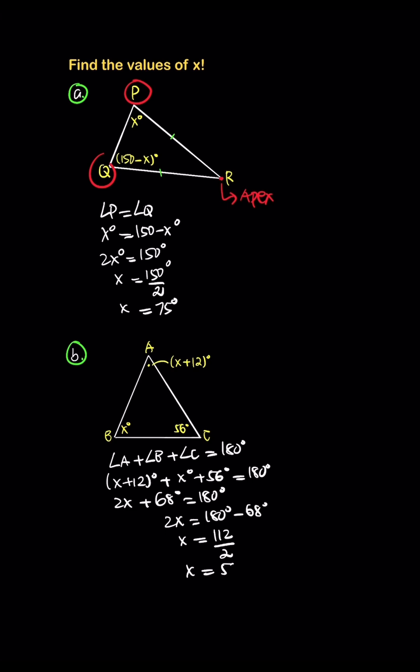Then you can find the exact value of angle A: 56 plus 12 equals 68 degrees. Angle B is 56 degrees. Angle C is 56 degrees. So now we can label that this is the base angle.